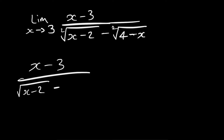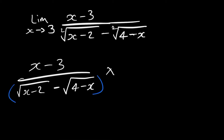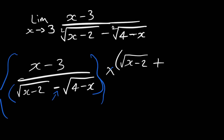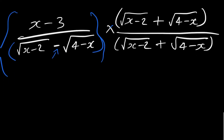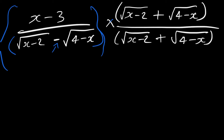To rationalize the denominator, we multiply the whole expression by the conjugate — taking the denominator and interchanging the sign. Here it's minus, so it becomes plus. We multiply by root x minus 2 plus root 4 minus x, over the same denominator root x minus 2 plus root 4 minus x.